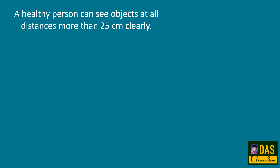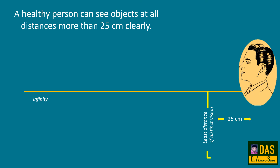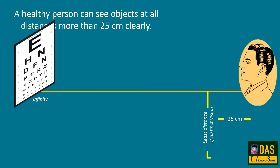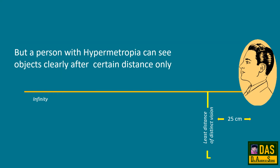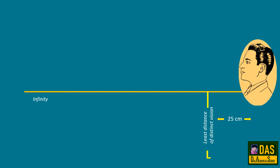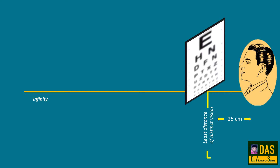A healthy person can see objects at all distances more than 25 cm clearly. But a person with hypermetropia can see objects clearly only after a certain distance. Observe the pictures — whether vision is clear or blurred. If the object is at the point of least distance of distinct vision, the vision is blurred, because the person with hypermetropia cannot see nearby objects clearly.